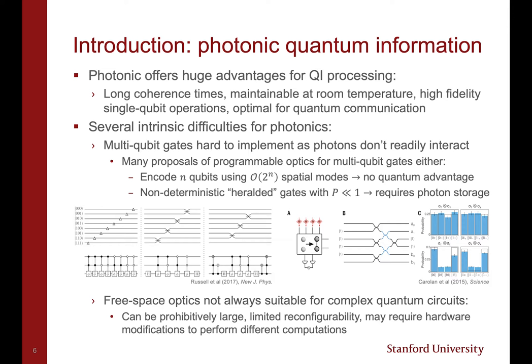However, there are several intrinsic difficulties for quantum photonics. Multi-qubit gates are difficult to implement, as photons don't readily interact. Many proposals for multi-qubit gates implemented with programmable optics either encode qubits using exponentially many spatial modes or operate non-deterministically with a probability of success much less than 1.